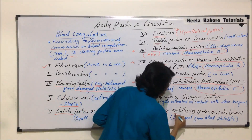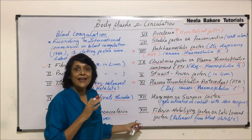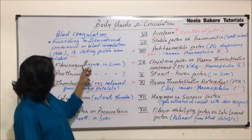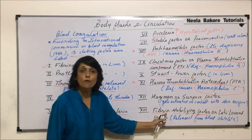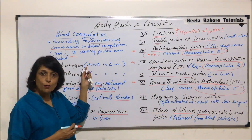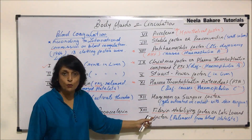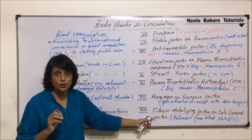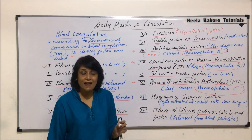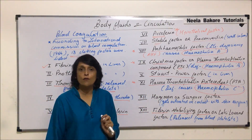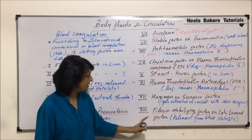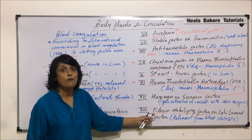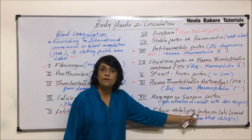The thirteenth factor is fibrin stabilizing factor. In the clotting process, fibrinogen gets converted into fibrin. Fibrinogen is a soluble protein, while fibrin is an insoluble protein. When fibrin changes into thread-like structures, those structures must be stabilized so that thrombus or clot formation can take place. That is why this factor helps stabilize the fibrin fibers.